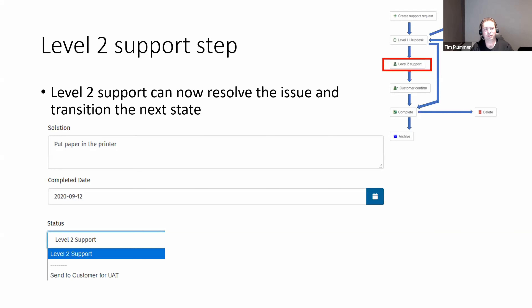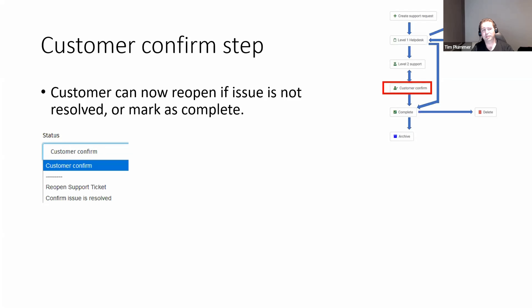Once received by the level two support person, they open up the request, put in their solution, fix the problem, set the completed date, and decide what to do. The only option they've got is to send it to the customer for UAT — because if you look at the level two support in the workflow, that's the only arrow coming off it. That's the only transition we set up, so they can't reject it, delete it, or immediately complete it.